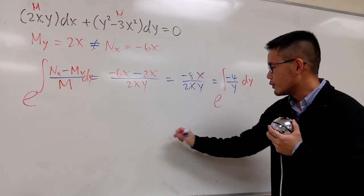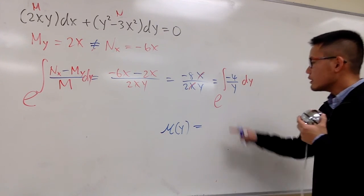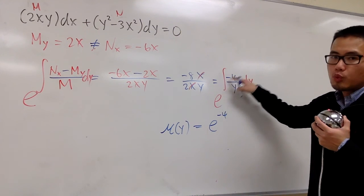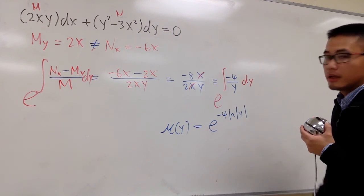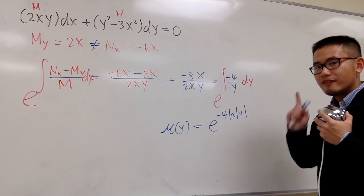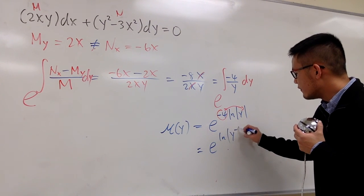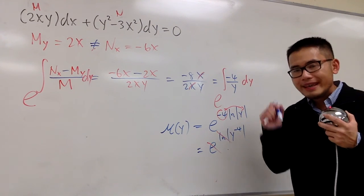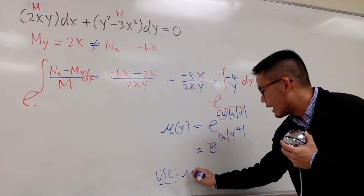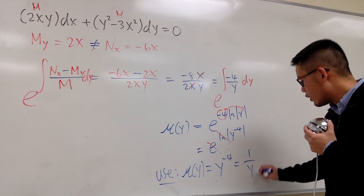So mu of y — the special integrating factor in terms of y — is e as the base with negative 4 in front. The integral of 1 over y is ln|y|, so we have e to the power of negative 4 ln|y|, which is e to the ln|y| to the negative 4th power. They cancel, and for integrating factor purposes we ignore the absolute value. So mu of y equals y to the negative 4th power, which is 1 over y to the 4th power.